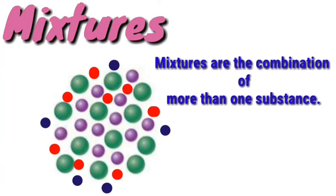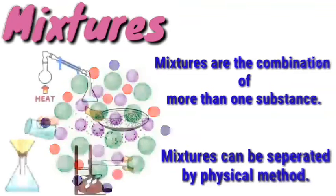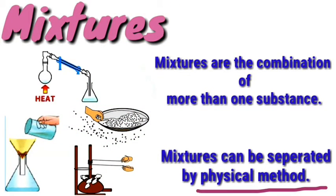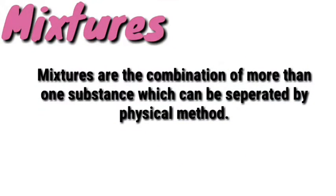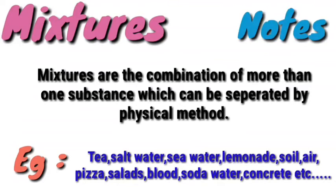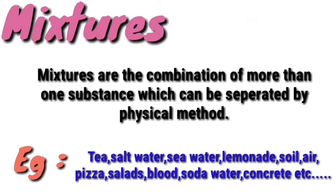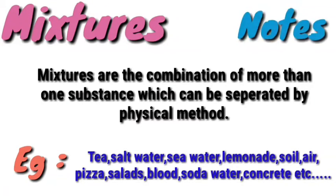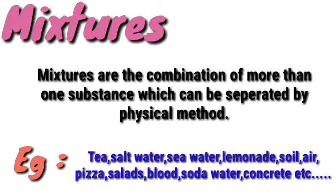Mixtures are the combination of more than one substance which can be separated by physical methods. Salt is a pure substance. Sugar is a pure substance. But a mixture of salt and water, or sugar and water, is a mixture. Air is a combination of more than one substance — there are a lot of gases. Soil is also a mixture.